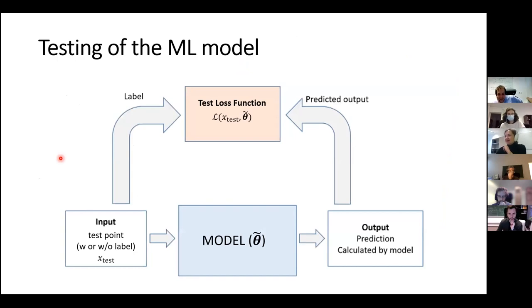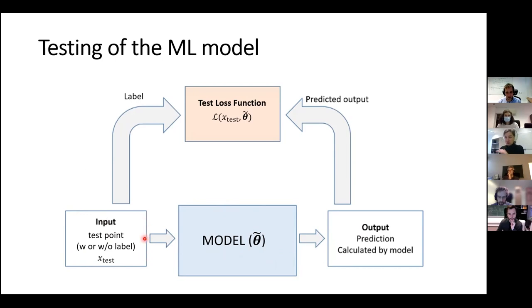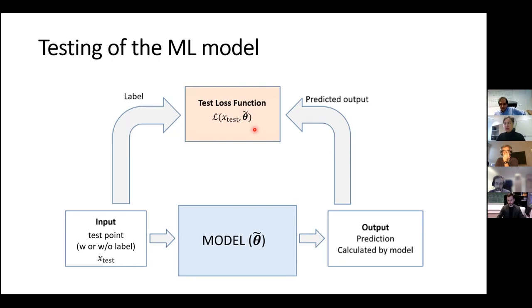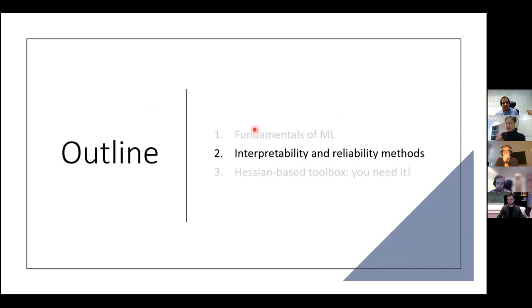Testing comes at the moment when we have a model with trained parameters corresponding to the minimum of the training loss function. We judge model performance on unseen data — data not present during optimization — and how large the test error is shows us the generalization ability of the model. This is the crème de la crème of machine learning, distinguishing it from simple function fitting: you want good generalization. You don't care that much about training error; you want the test error to be as low as possible, ideally of the same order as the training error.